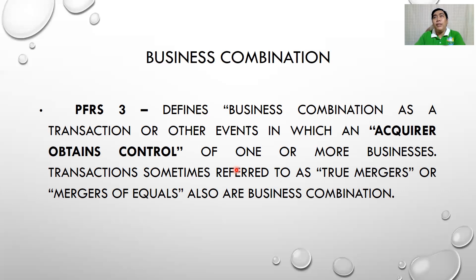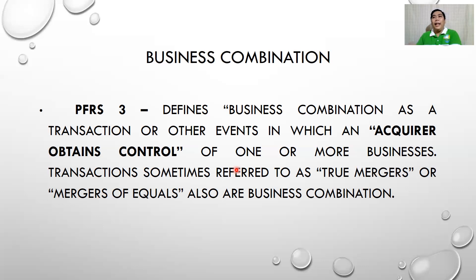Another business combination that happened in the Philippines is the PNB — Philippine National Bank — and Allied Bank. If you remember, there used to be an Allied Bank along the avenue. Allied Bank was acquired by the Philippine National Bank. The Philippine National Bank bought all the properties and assets of Allied Bank. That is a business combination.